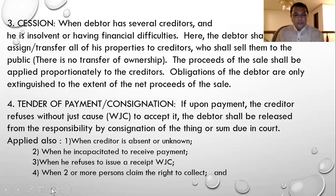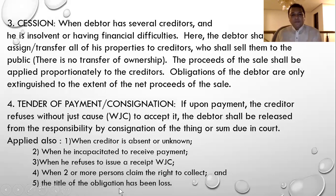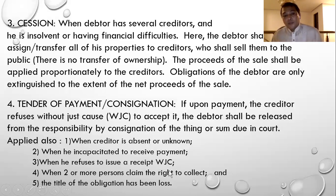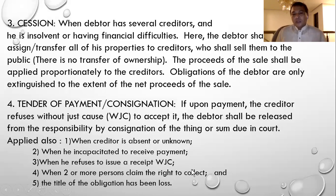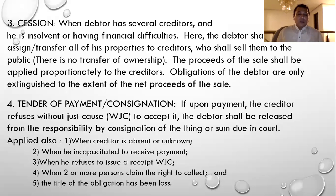Number five: when the title of the obligation has been lost — for example, if the promissory note, check, or bill of exchange is lost. The debtor should not pay because if the bill of exchange has been negotiated to another person, payment would not extinguish the obligation. So the debtor must recover the title document, such as the check, before paying.